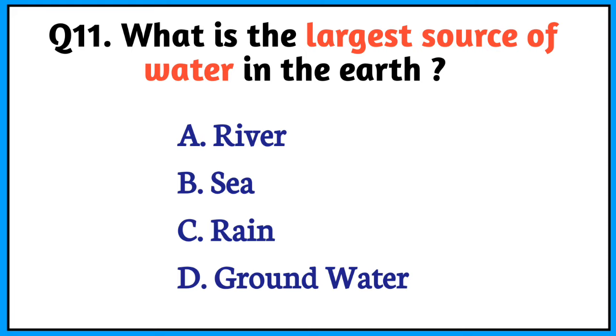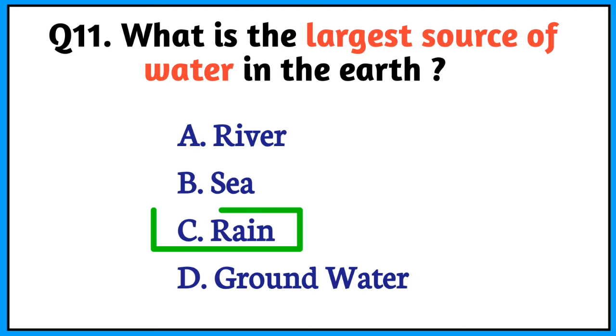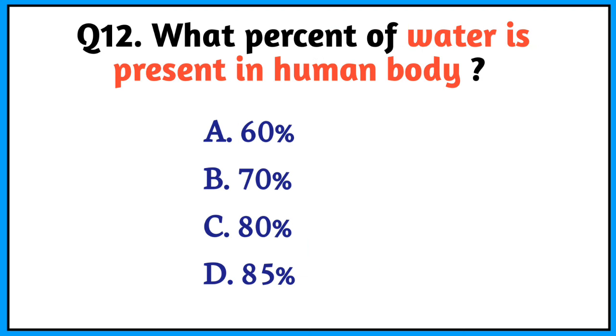Question number 11. What is the largest source of water on Earth? The right answer is option C. Rain.